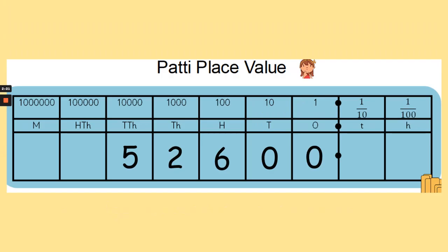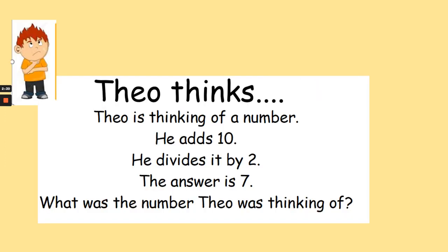So Theo is thinking of a number. He adds 10 to the number, then he divides it by 2, and the answer is 7. What was the number Theo was thinking of? Pause the video now to work out your answer.